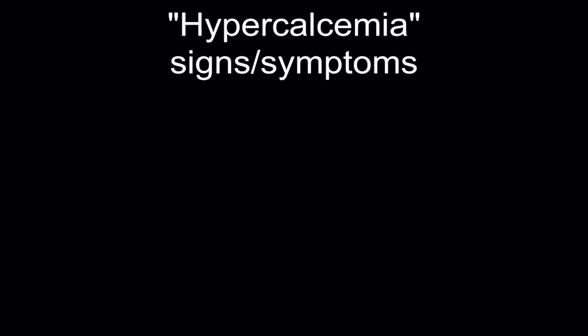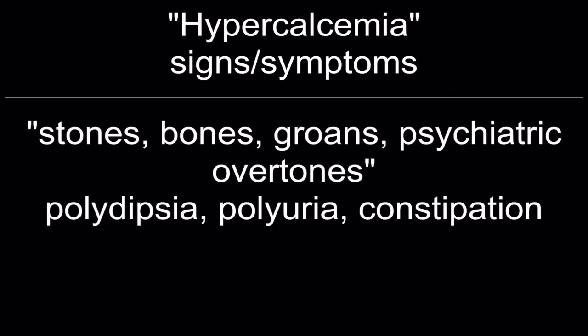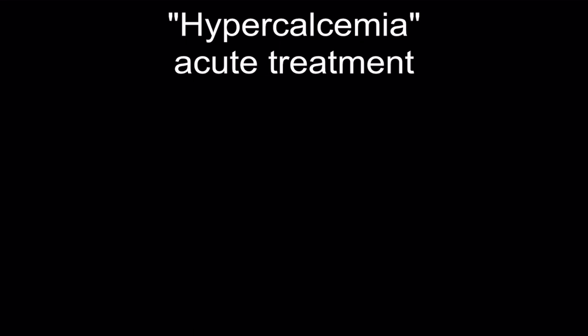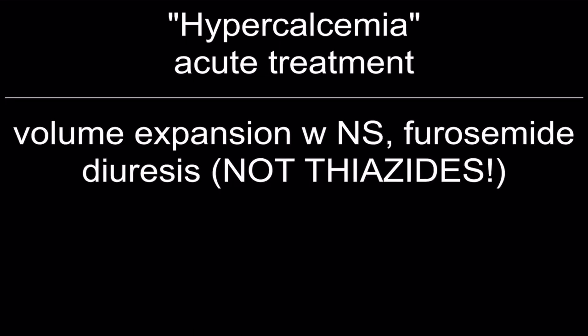Hypercalcemia signs and symptoms: stones, bones, groans, psychiatric overtones, polydipsia, polyuria, and constipation. EKG findings: short QT, prolonged PR. Acute treatment: volume expansion with NS, furosemide diuresis — not thiazides.